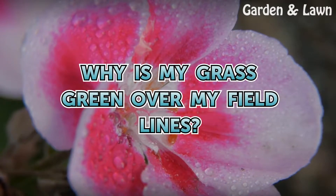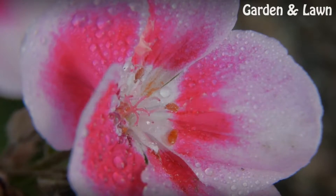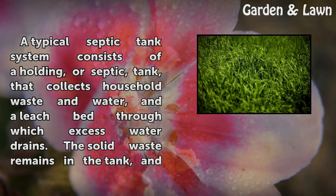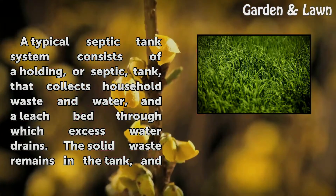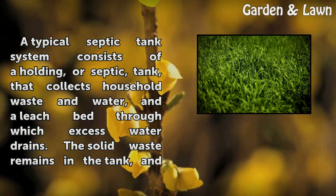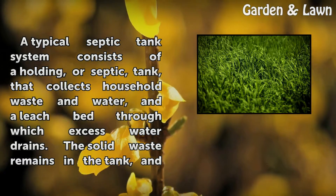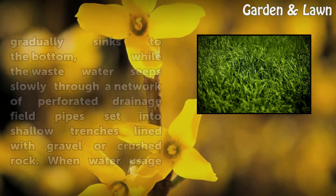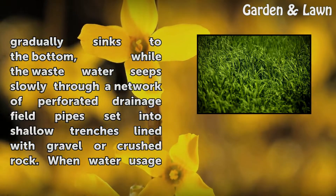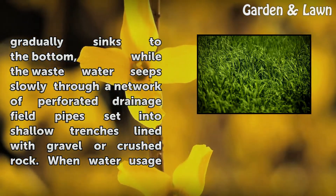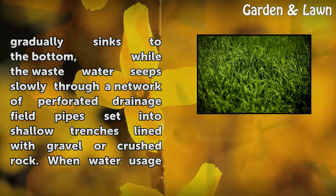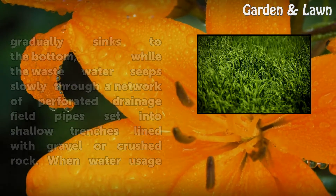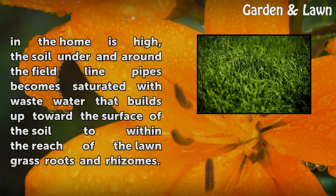Why is my grass green over my field lines? A typical septic tank system consists of a holding or septic tank that collects household waste and water, and a leach bed through which excess water drains. The solid waste remains in the tank and gradually sinks to the bottom, while the wastewater seeps slowly through a network of perforated drainage field pipes set into shallow trenches lined with gravel or crushed rock.